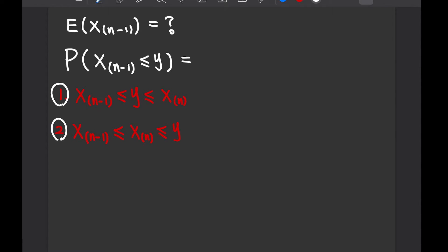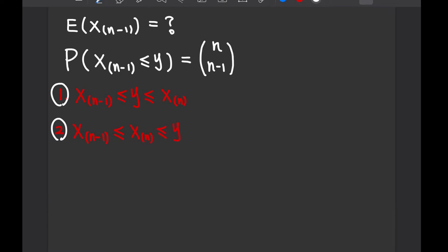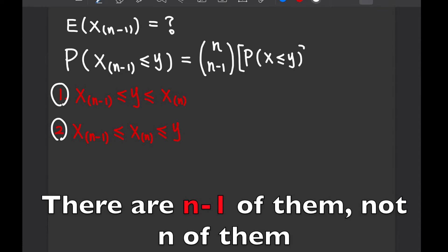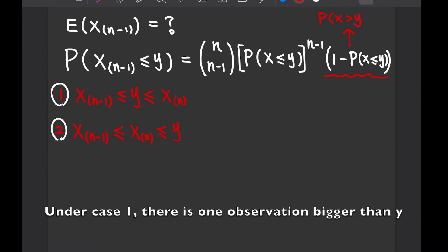For the first case, you need to pick n-1 numbers that are smaller than y, each with a probability of P(x ≤ y). Since there are n-1 of them, you take that probability to the power of n-1. Then you multiply this expression by 1 minus P(x ≤ y), which is the same as the probability of x being greater than y.